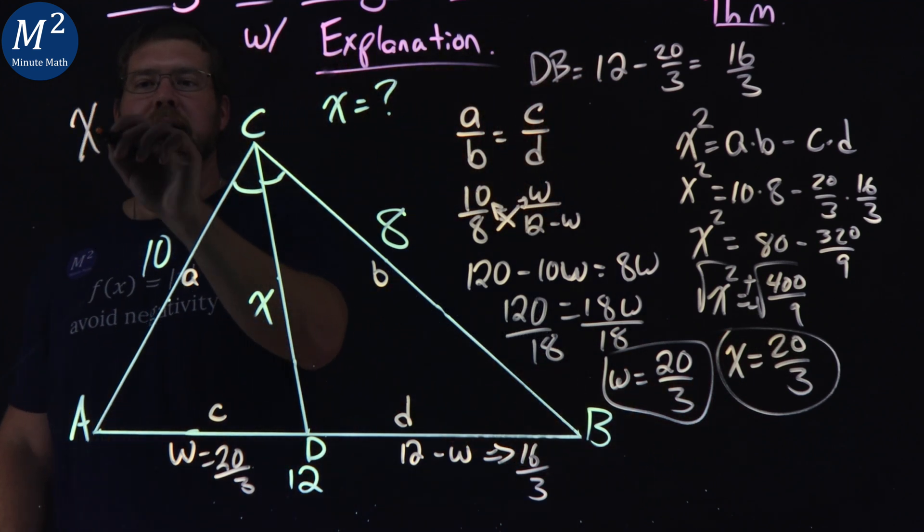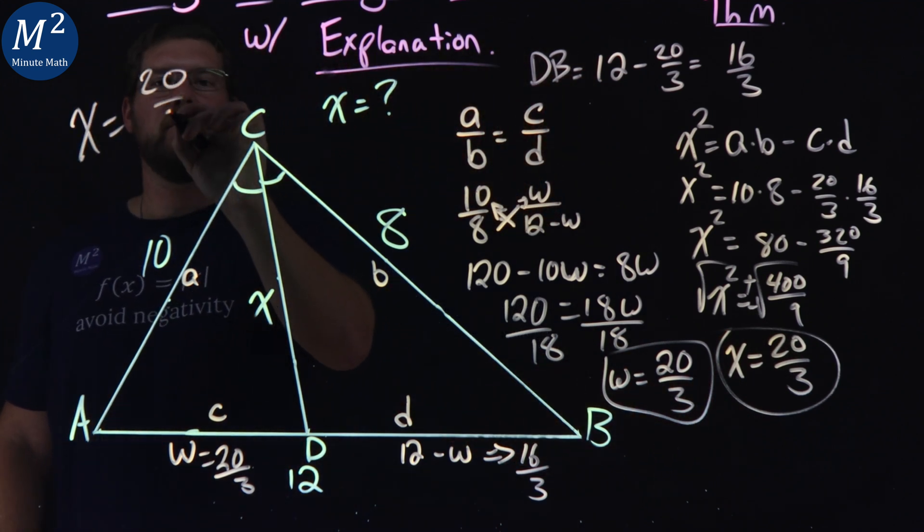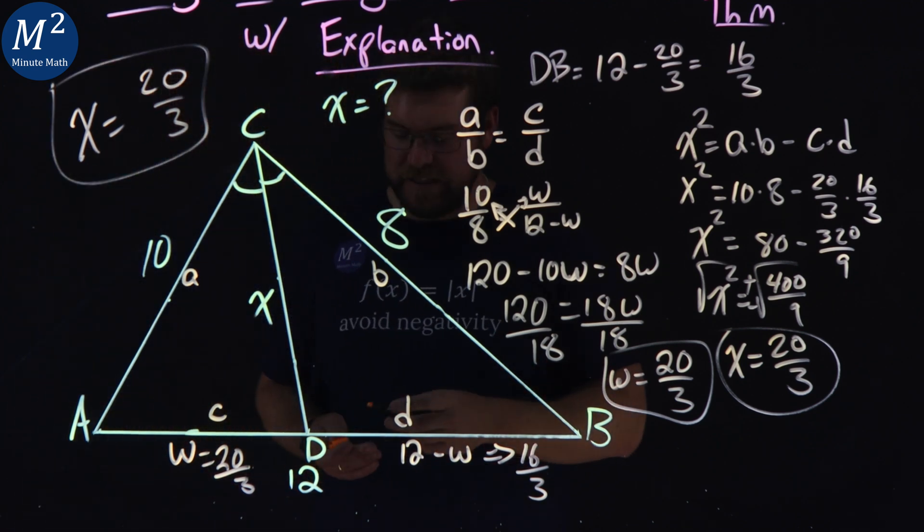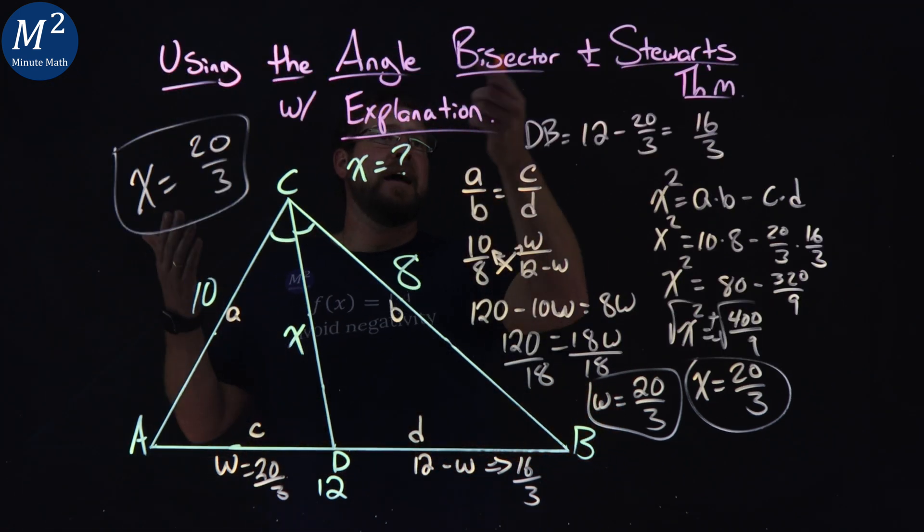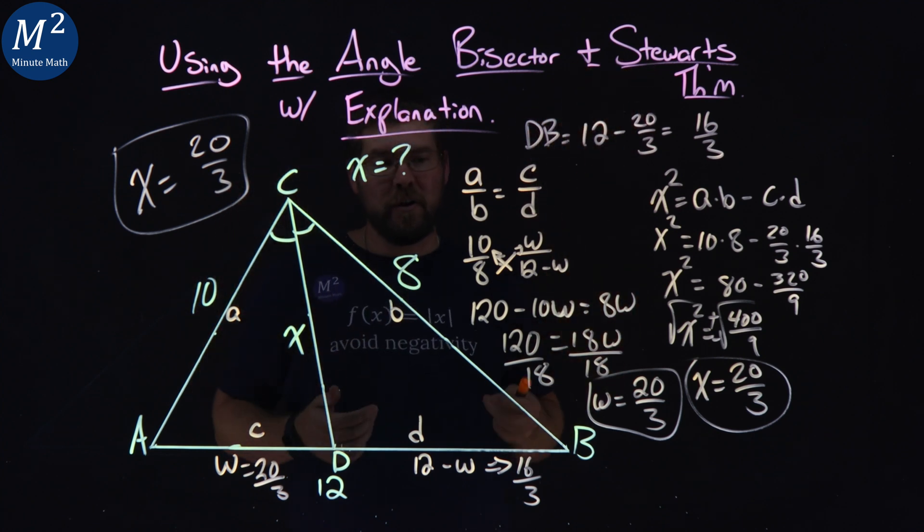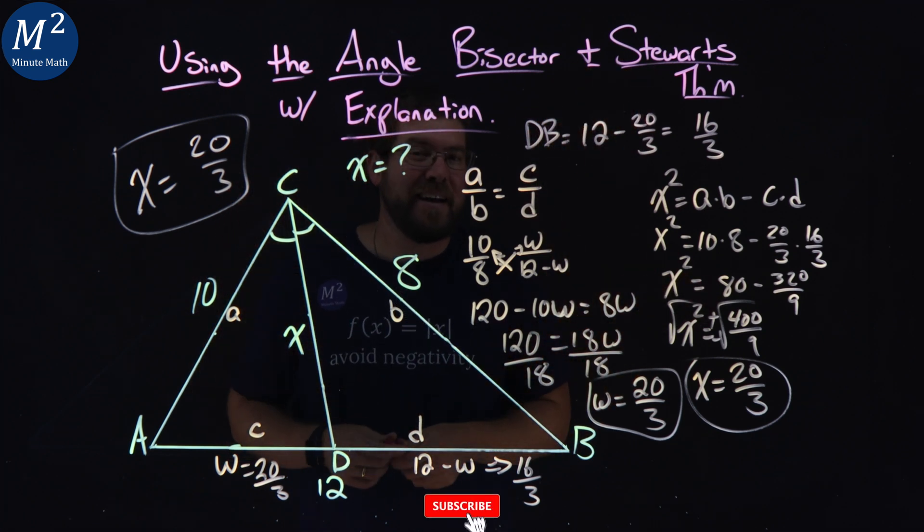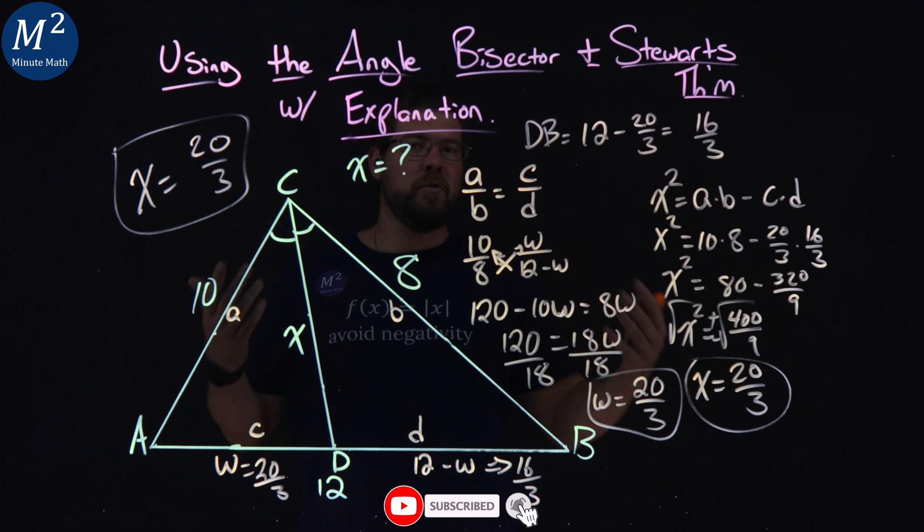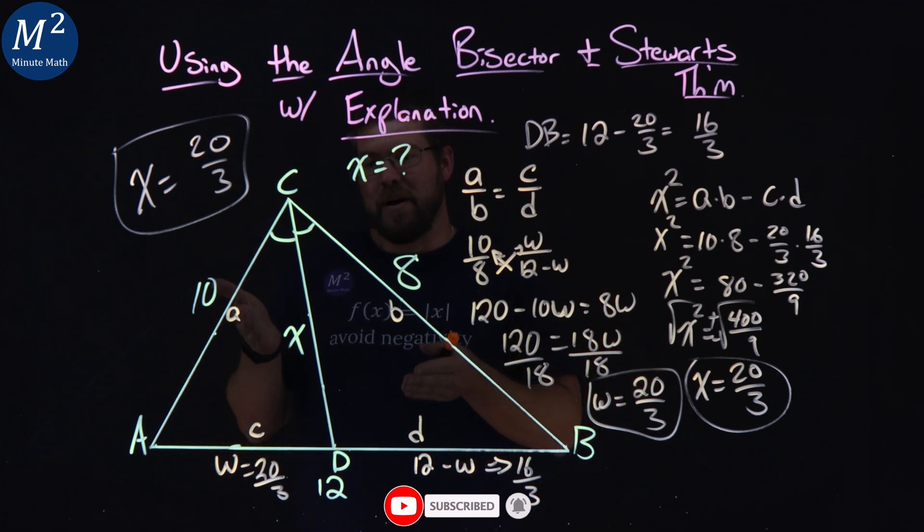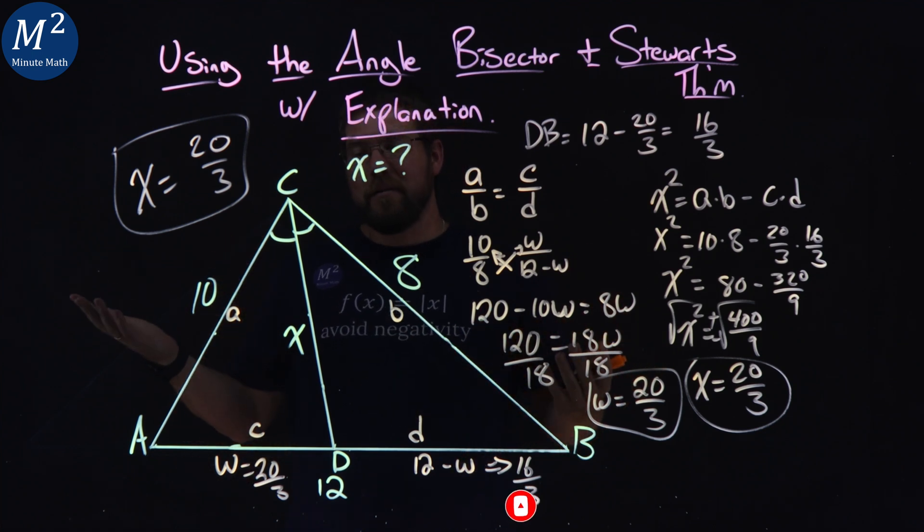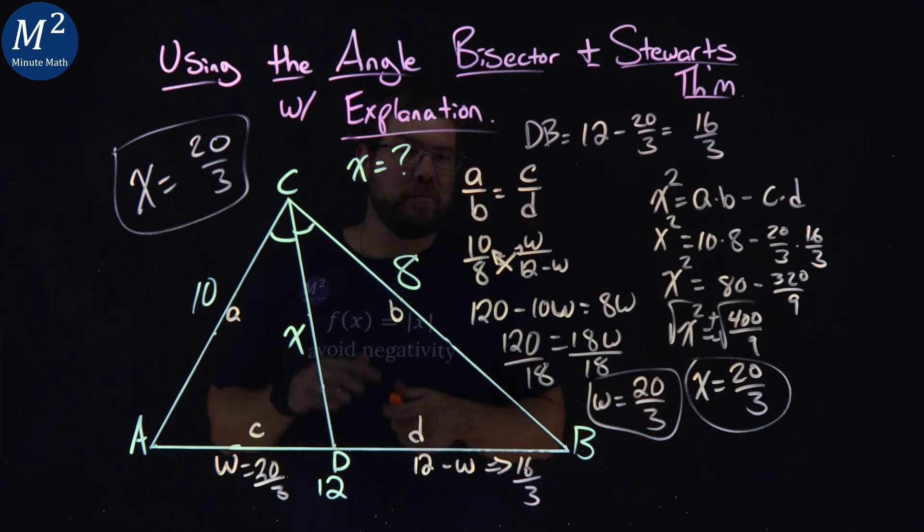And so our x value here, x equals 20 over 3. And that was the length of CD. Hopefully you learned the angle bisector theorem as well as Stewart's theorem and applying both of those. Again, like most theorems, the more theorems you know, the more tools in your arsenal to solve a problem like this. So 20 over 3 was the answer here, and I hope you liked this video.